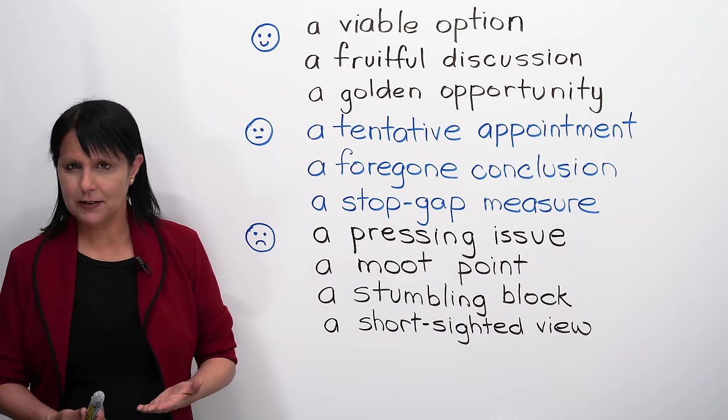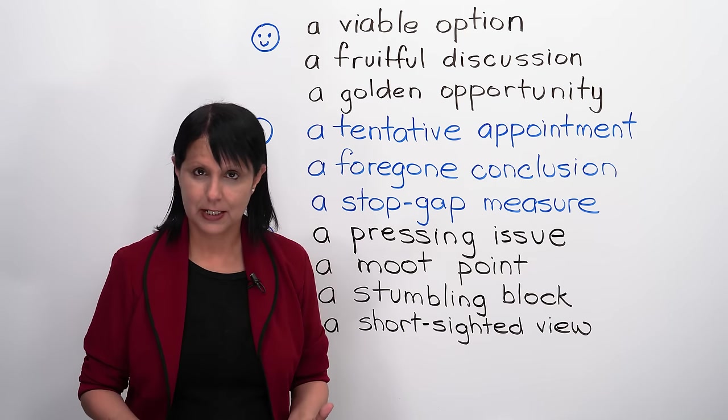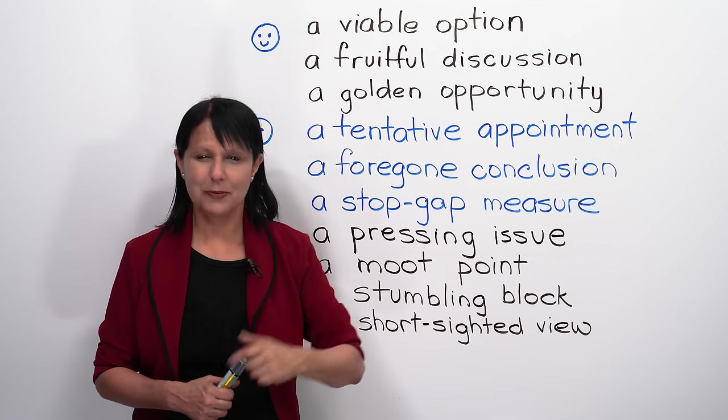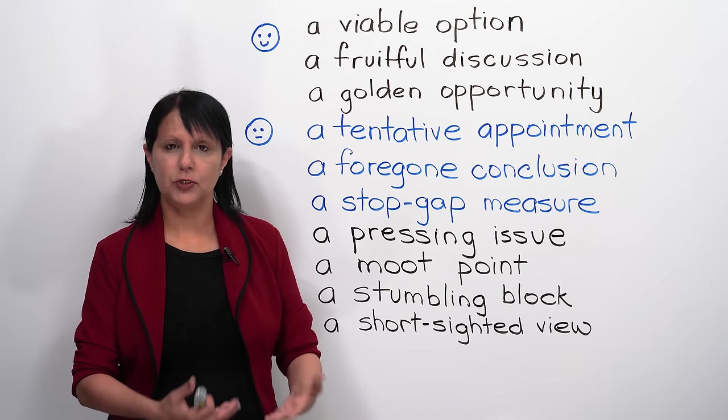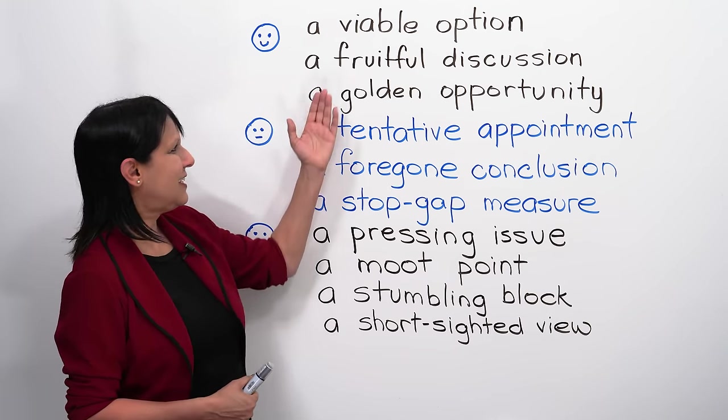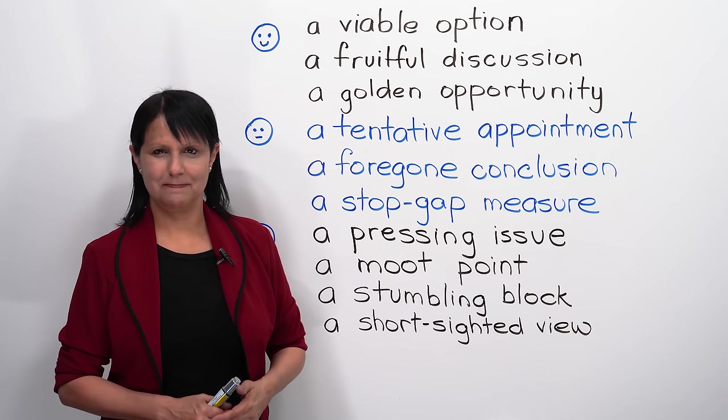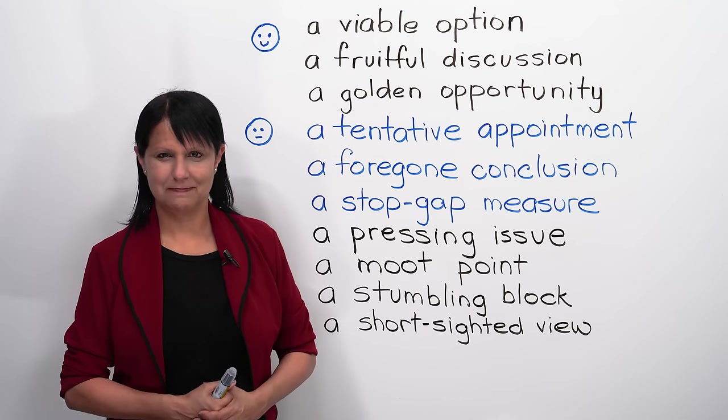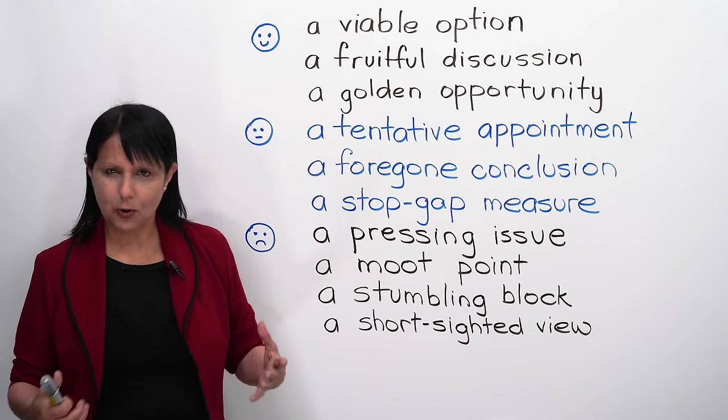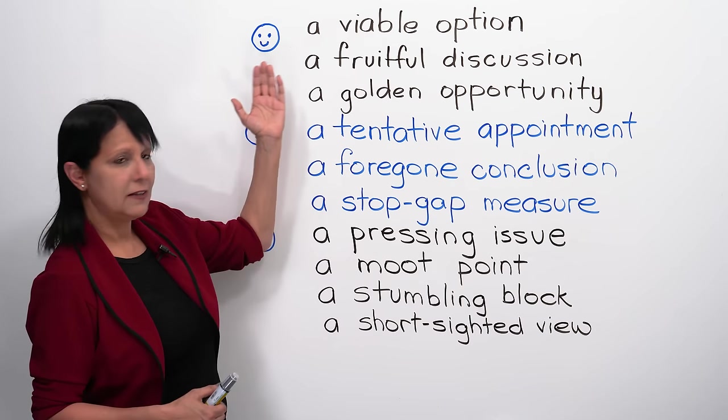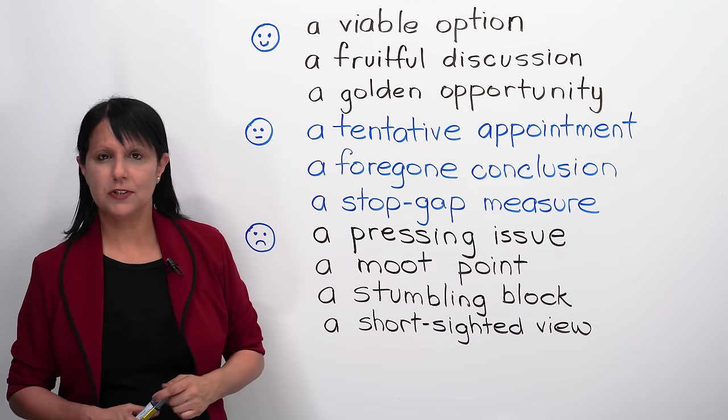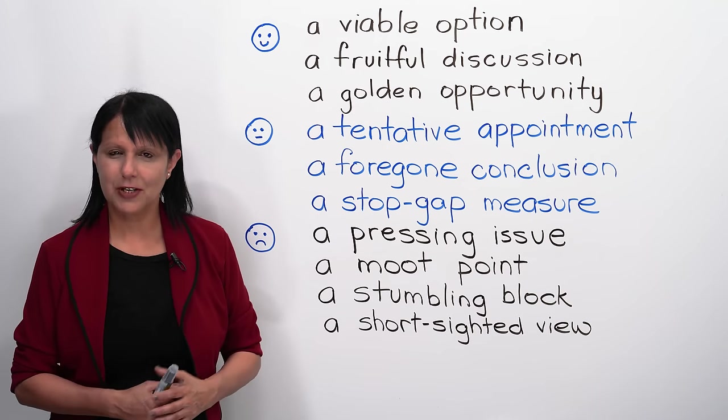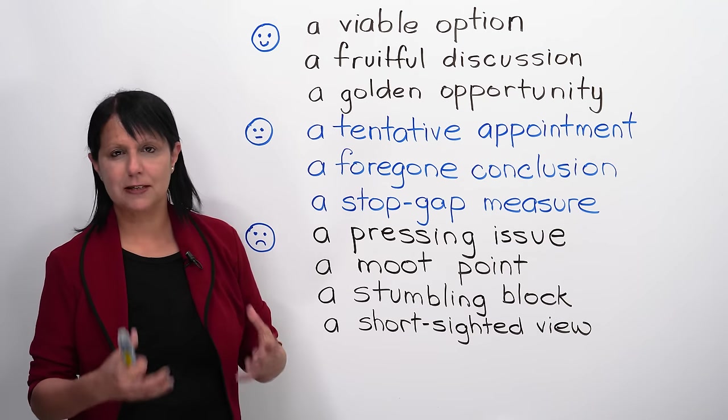So, now, say them after me because you want to be able to also say them and use them comfortably. And we will be using them in sentences in the next board, but let's also master the pronunciation. So, repeat after me. A viable option, a fruitful discussion, a golden opportunity. Now, are you just going to be saying that phrase? No, of course it will be in a sentence. For example, that's a viable option. That's a fruitful discussion, or that was a fruitful discussion. That's a golden opportunity. So, you could use it in many ways, but that's a really simple way.